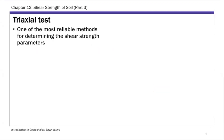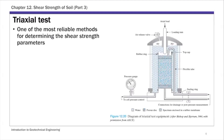The triaxial test is one of the most reliable methods to determine shear strength parameters. In part two we talked about direct shear tests, which are very commonly used and very fast and economical. Triaxial tests are actually the most reliable method, so first I want to explain what this test is and then talk about the different types.